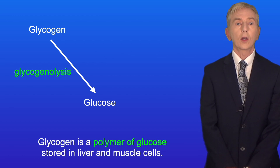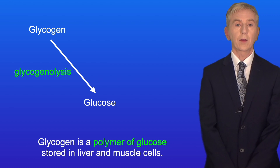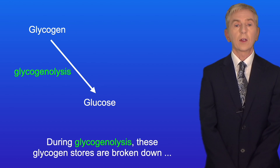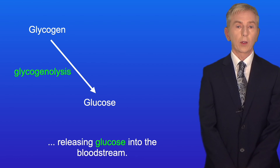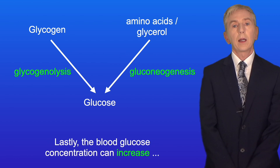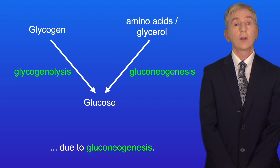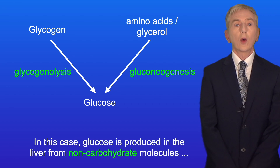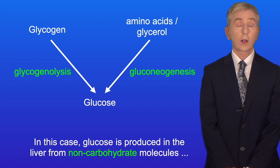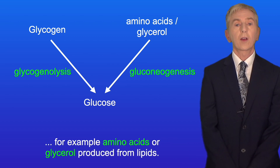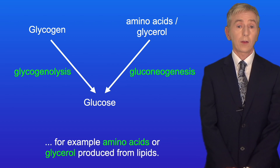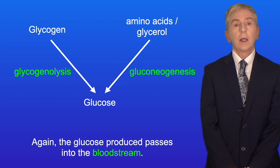The second way that the blood glucose concentration can increase is via glycogenolysis. Glycogen is a polymer of glucose stored in liver and muscle cells. During glycogenolysis, these glycogen stores are broken down, releasing glucose into the bloodstream. Lastly, the blood glucose concentration can increase due to gluconeogenesis. In this case, glucose is produced in the liver from non-carbohydrate molecules, for example amino acids or glycerol produced from lipids, and again the glucose produced passes into the bloodstream.